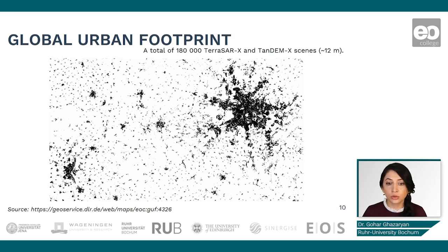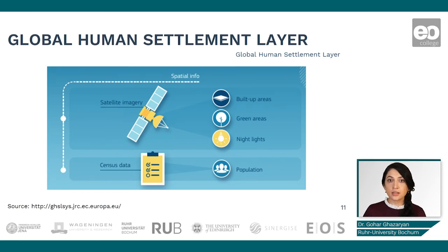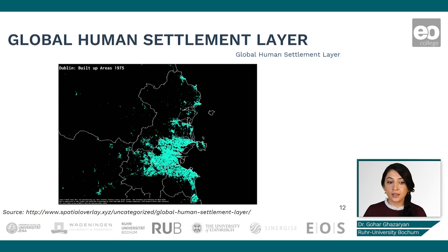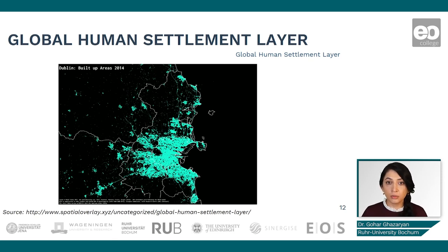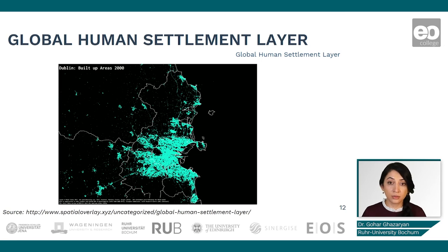The first ready-to-use dataset is the Global Urban Footprint, based on remotely sensed data from TerraSAR-X and Tandem-X radar data, providing global urban cover at around 10-meter spatial resolution. Another global dataset is the Global Human Settlement Layer, which uses satellite imagery and additional information to provide data on built-up areas over a long time span. Here we can see an example of the increase in built-up areas from the 1970s to 2014, and later we will use this dataset in our practical session.